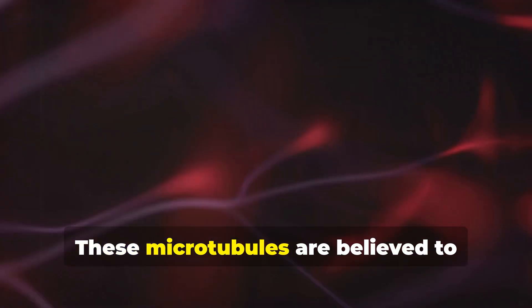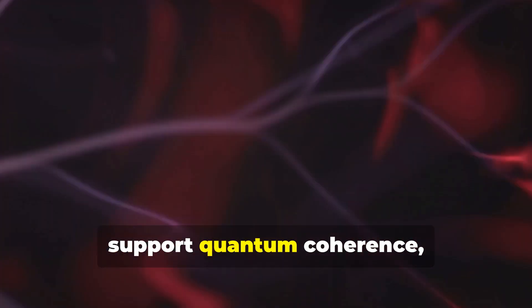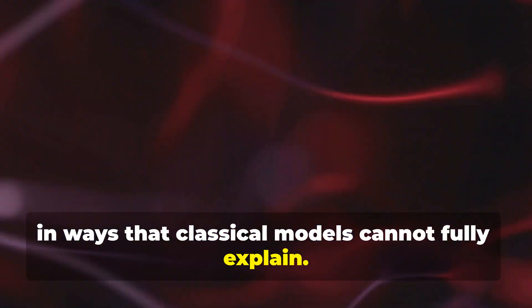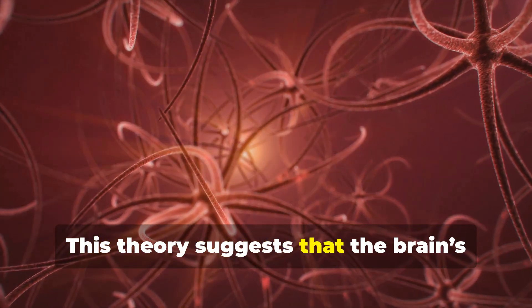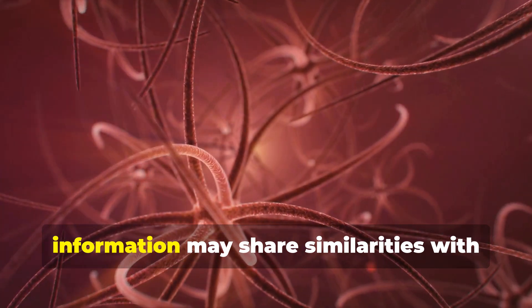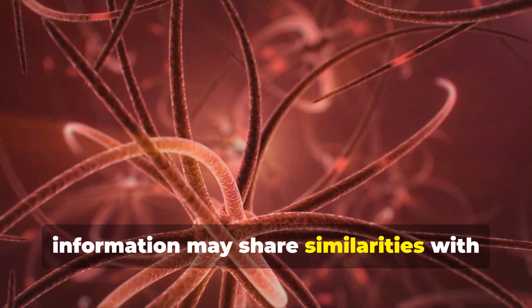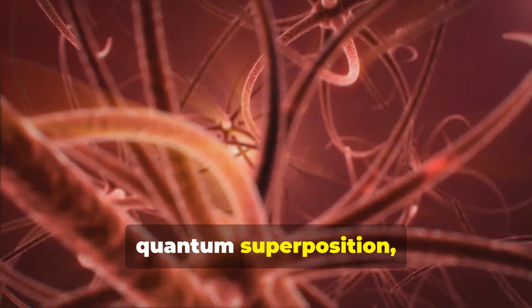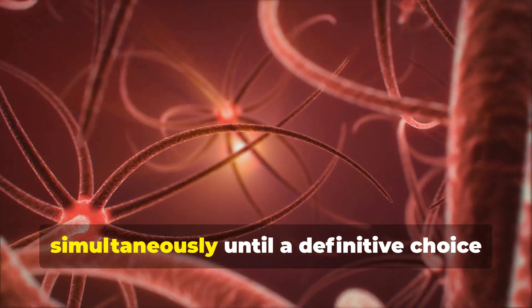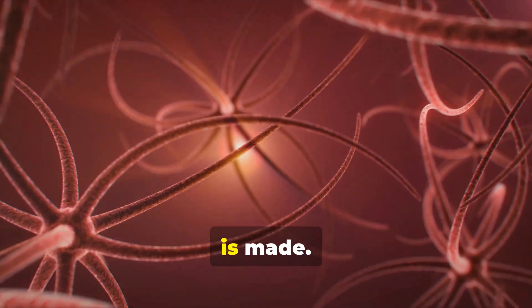These microtubules are believed to support quantum coherence, enabling the brain to process information in ways that classical models cannot fully explain. This theory suggests that the brain's ability to process vast amounts of information may share similarities with quantum superposition, where multiple possibilities exist simultaneously until a definitive choice is made.